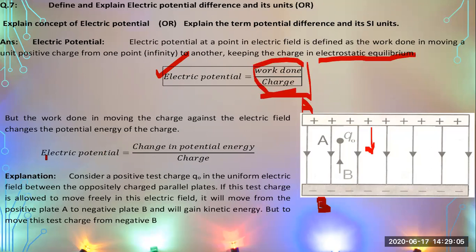From previous classes, you already know that whenever some amount of work is done, some amount of energy is produced or changed. The change of energy of any object from one point to another results in doing some work. For example, lifting an object from the ground to a certain height involves performing work while changing one type of energy into another.